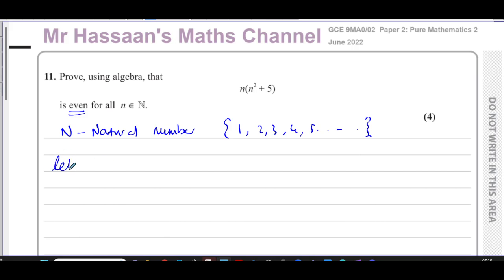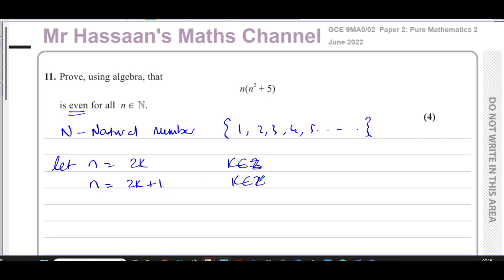So we can say let n equal 2k, where k is an integer. And let n equal 2k minus 1, where k is an integer. When k equals 1, n equals 2. When k equals 0, n equals 0 for the first case, and n equals 1 for the second.